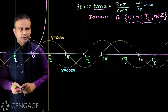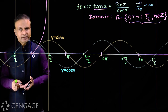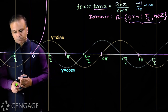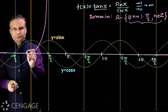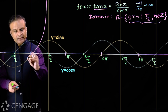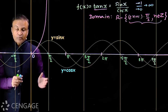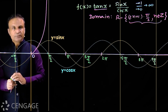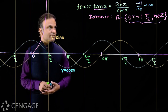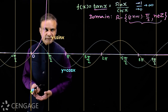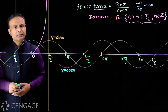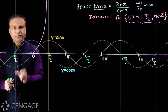Now consider the fourth quadrant. Here sin x is negative and cos x is positive, so the ratio tan x will be negative — the graph lies below the x-axis. Moving from -π/2 to 0: cos x increases from 0 to 1 and sin x increases from -1 to 0. Cos x becomes more positive and sin x becomes less negative, so the ratio sin x / cos x is negative but becoming less negative — meaning tan x is an increasing function here too.